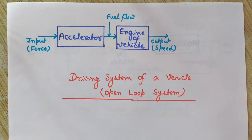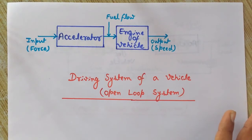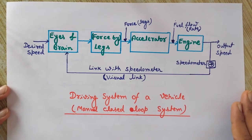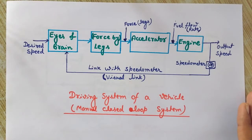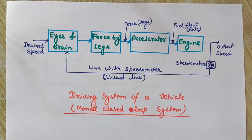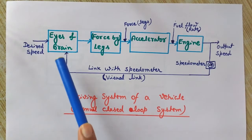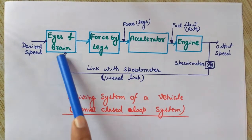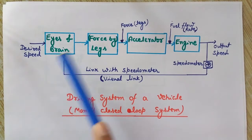Now we will see an example of a closed loop system where we have a desired velocity to achieve using feedback. This is the block diagram of a driving system of a vehicle — it is a manual closed loop system. Here we have a feedback loop, so it is a closed loop system.